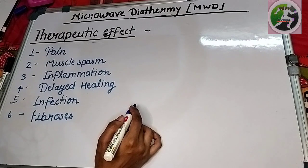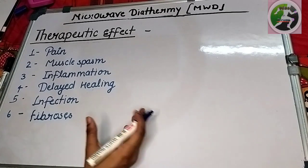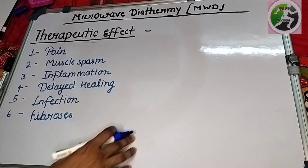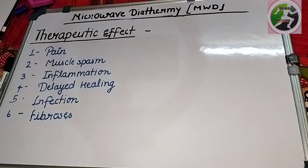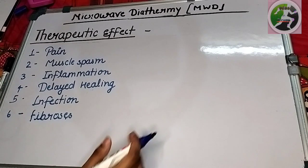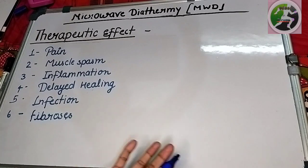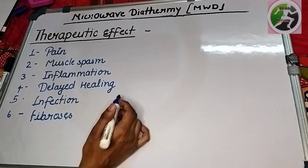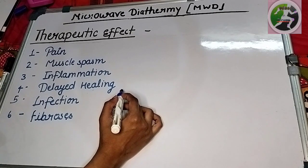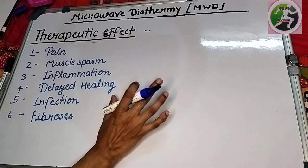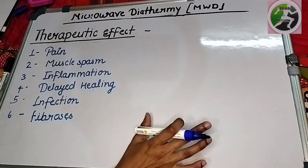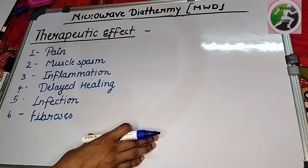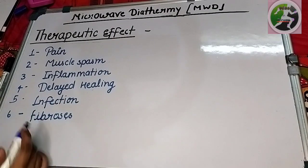If we use MWD, heat is produced. Heat production increases blood circulation. When blood circulation increases, oxygen levels increase. Improved oxygen increases metabolic activity, which promotes the healing process. When using MWD for a healing area, we need to remember not to use it directly on the wound, but to use it proximally — proximal use will improve blood circulation and make the healing process faster.